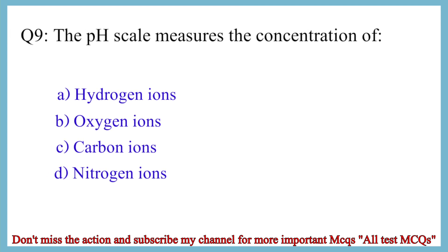Question No. 9. The pH scale measures the concentration of? The correct answer is option A: Hydrogen ions.